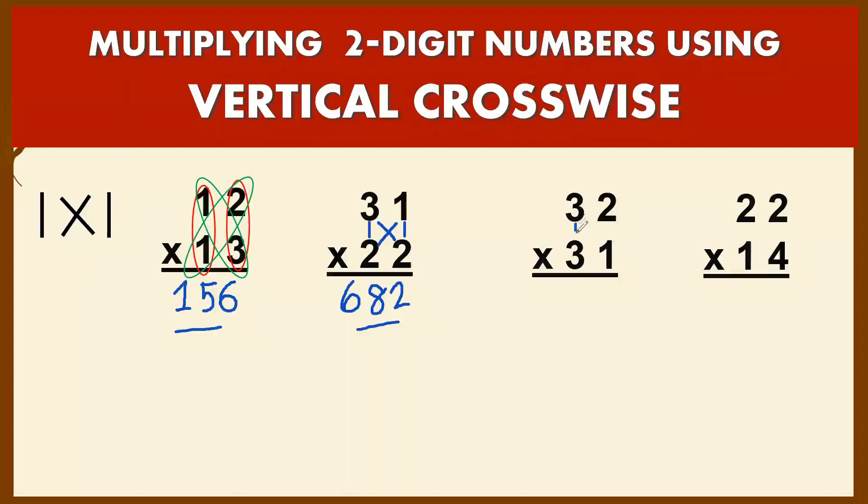Third example: 32 times 31. You multiply the first column, 3 times 3, which gives you 9. Crosswise, you have 3 times 1, that's 3, then 2 times 3 is 6. 6 plus 3 is 9. The last column: 2 times 1 is 2. Your answer is 992.